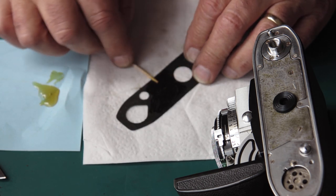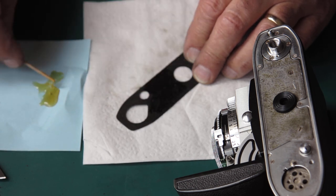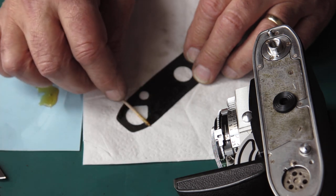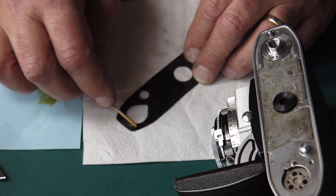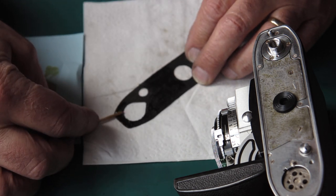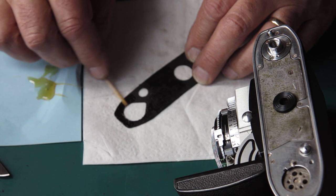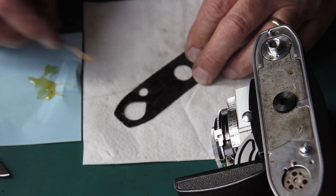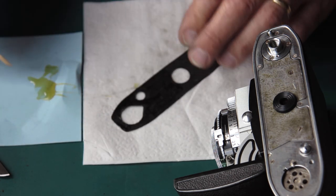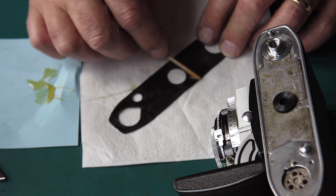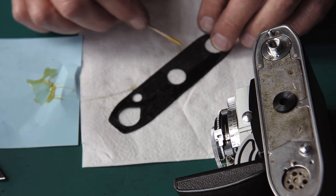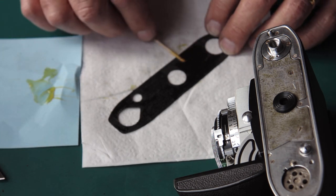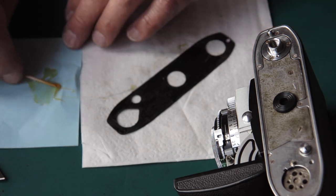It's important to get your adhesive right to the edges, because when things peel up, they peel up from the edges. Nothing peels up from the center. It peels away from the edges, so you need to make sure you have a good coverage right to the edges. This leatherette is soaking up this adhesive. I may have to do this twice.